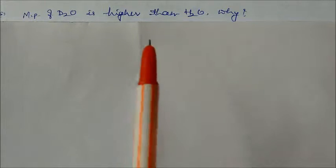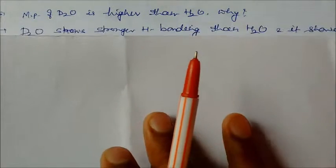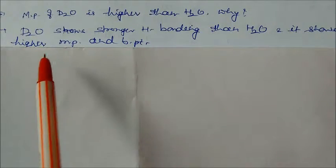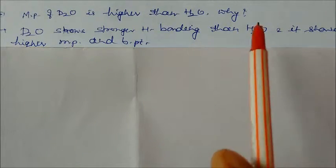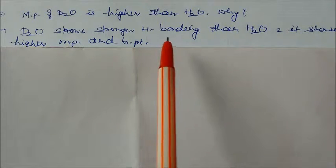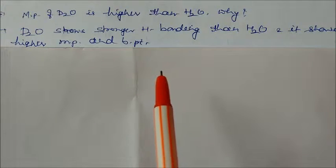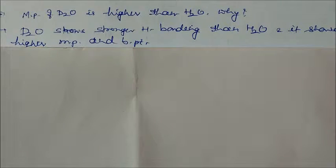The melting point of deuterium oxide is higher than water. Why? Because in D2O there is stronger hydrogen bonding than water, that's why it has high melting points and boiling point. Hydrogen bonding has a large number of applications in different types of compounds, giving them high boiling points.